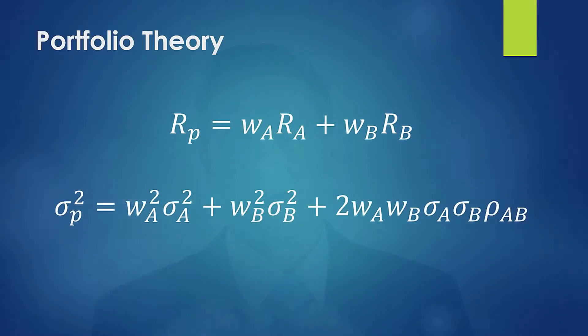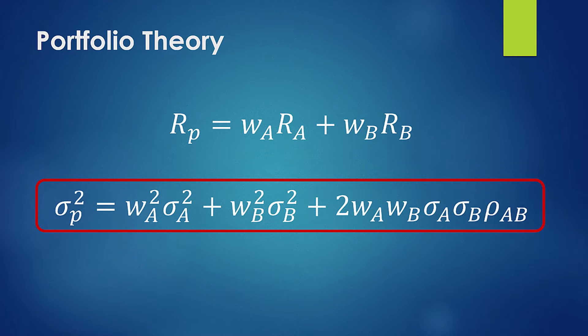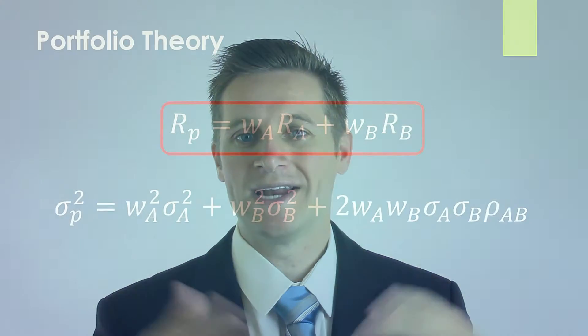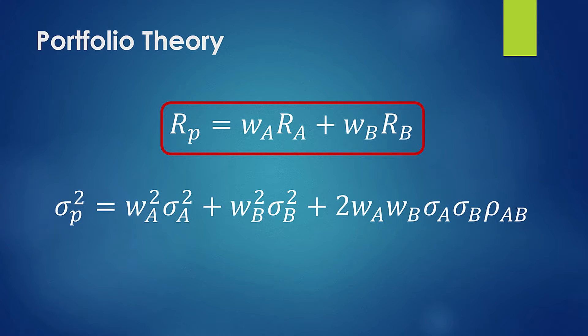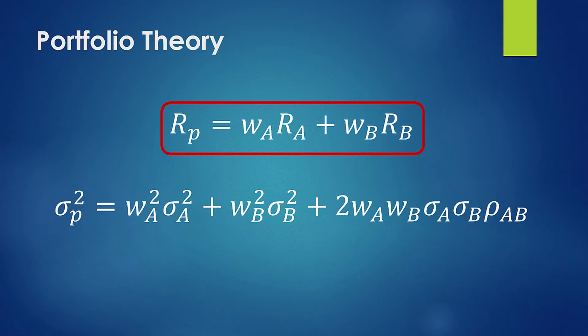So let's take a look at the equations. There are two equations here. The top equation is the equation for your portfolio return, and the bottom equation is the equation for your portfolio variance, or portfolio risk. The first equation is a pretty simple one to understand — it's just a weighted average of your expected returns. You take the weight of the first asset, asset A — whether your portfolio is 60-40, 50-50, or 70-30 — times the expected return of asset A, plus the weight of asset B times the return of asset B. That gives you the overall return for the portfolio.